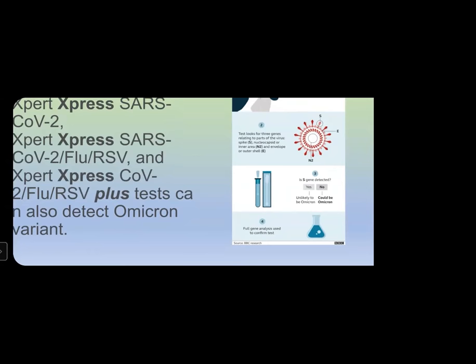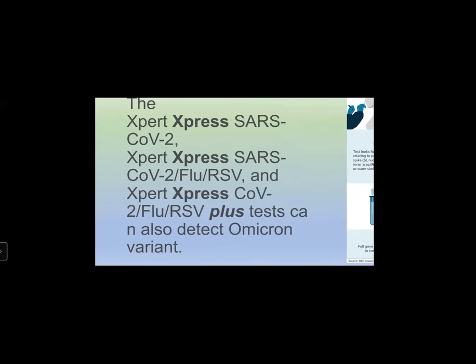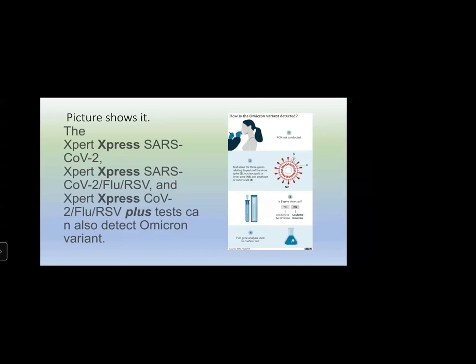Final confirmation is done by full gene analysis through whole genome sequencing. The Cepheid GeneXpert Expert Express SARS-CoV-2, the Expert Express SARS-CoV-2 Flu RSV, and the Expert Express XO Flu RSV+ can also detect Omicron variant by virtue of the S gene dropout principle: the S gene is not detected but the other two targets are detected. This is the same genetic amplification or PCR test, though results can be quicker.